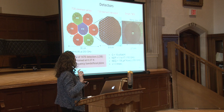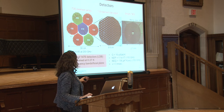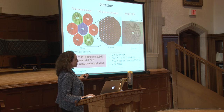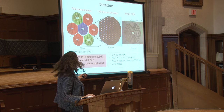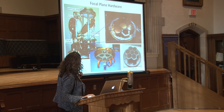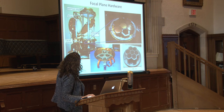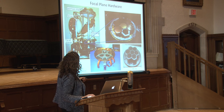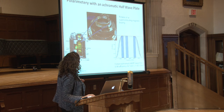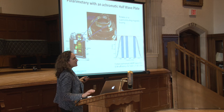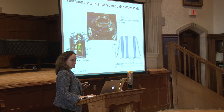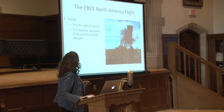The detectors form a large array; each individual bolometer is tiny. The half-wave plate is an achromatic half-wave plate, designed to operate from about 120 GHz all the way up to about 450 GHz, so a single element serves the full range of frequencies.